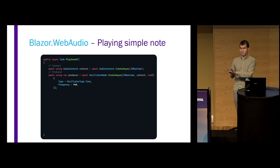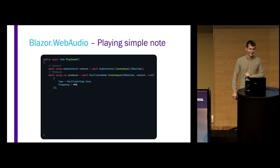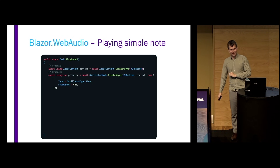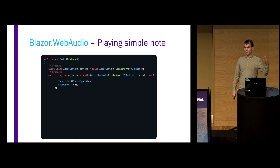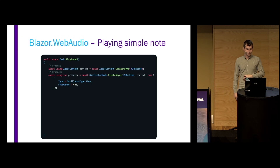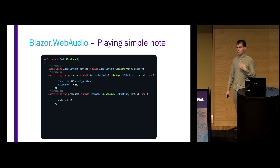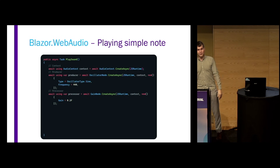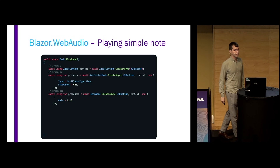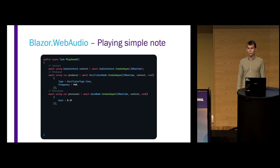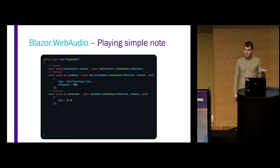We define that we want to use the sine wave — there are some different options, for example it could be the sawtooth type, which people might be familiar with from retro games. And we also define the frequency, which is basically the pitch of the sound. Then we create the processor — in our case, the gain node. We make some settings for it; we don't want to use 100%, so we say 0.2 to ensure we're not going to destroy the speakers.